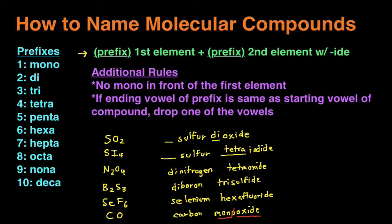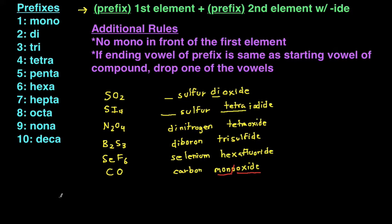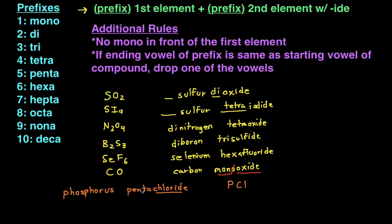Now let's do the opposite — I'll give you the name and we'll figure out the formula. Let's write the formula for phosphorus pentachloride. The first element is phosphorus, so we write P. There's no prefix in front of it, so it's one P, because we don't use 'mono' for the first element. The second element is chloride, which means chlorine, and we have five of them because of the prefix 'penta.' So we write PCl5.